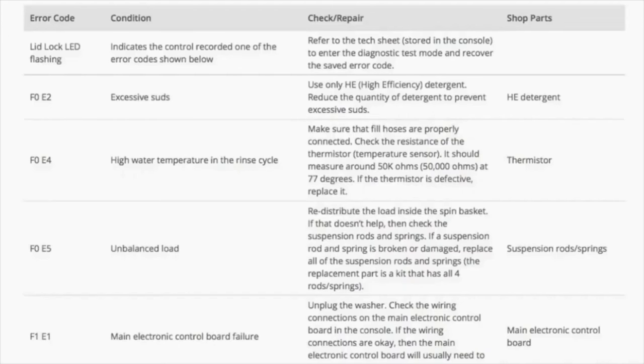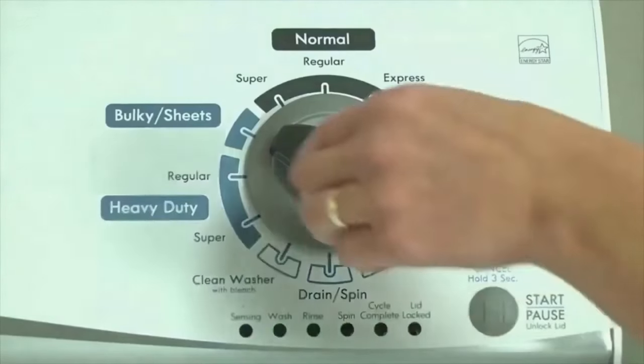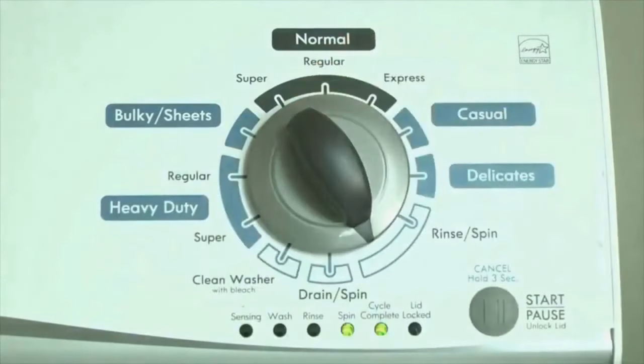Now you are reading the error codes. From here turn the control dial 1 click clockwise to display the first saved error code. Just the sensing light flashes if no error code was recorded.